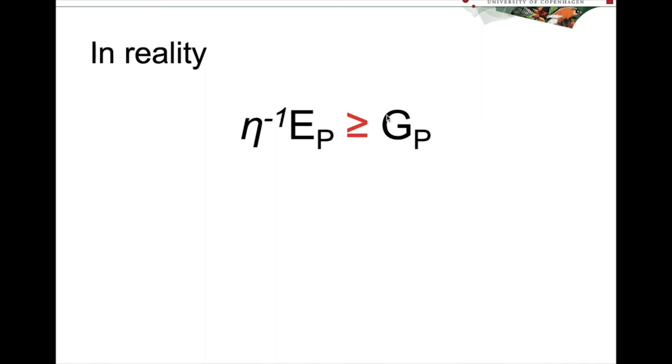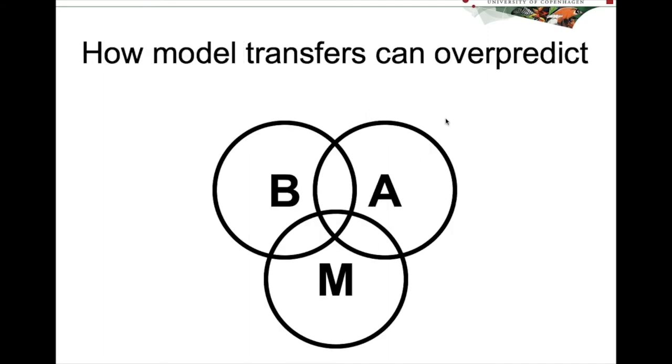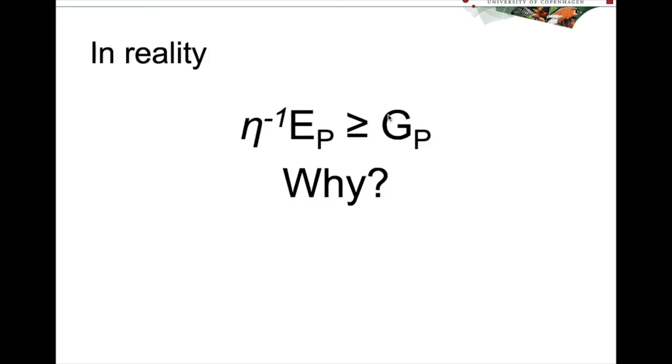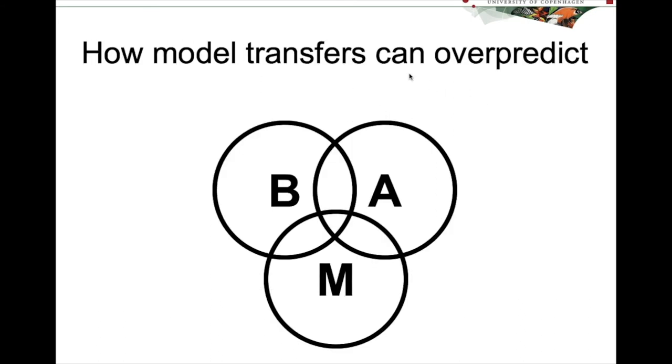So why is GP underrepresented? This is basically the same as saying that model transfers can overpredict where there's suitable habitat. And this brings us back to the BAM diagram, which by now I'm sure you're all very familiar with. So the area where a species can persist is in the middle here, where there are suitable biotic conditions, suitable abiotic conditions, and that the species can access successfully. So this area in the middle.